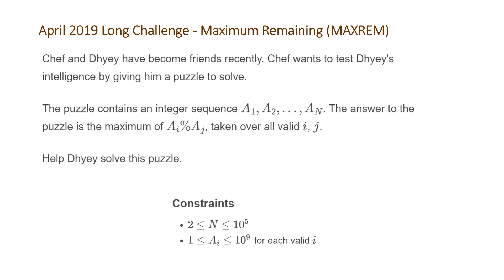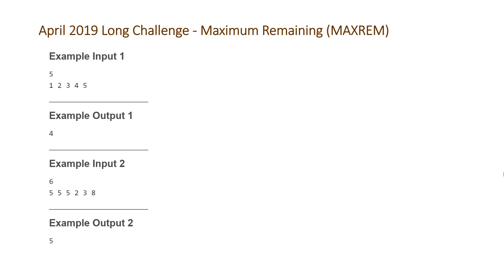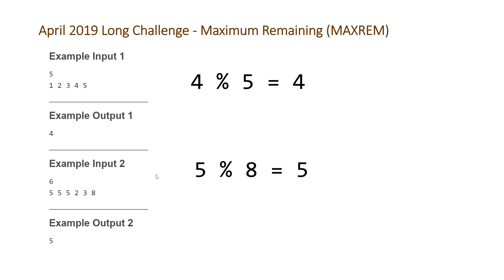Let's take a look at the examples CodeChef provided. For the first one, our input is a single integer n followed by n integers on the next line: 1 2 3 4 5, and the answer is 4, obtained by taking 4 modulus 5. Because 5 is greater than 4, the modulus just gives us the same number. For the second example, n equals 6 and the answer is 5, obtained by doing 5 modulus 8.